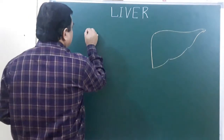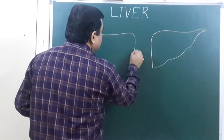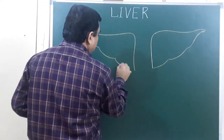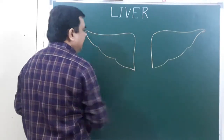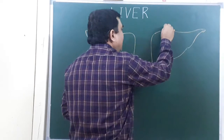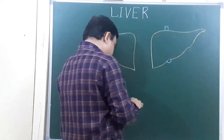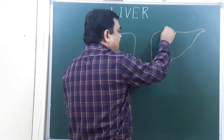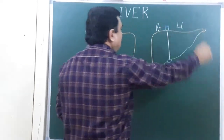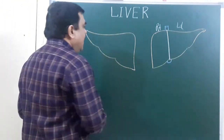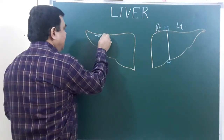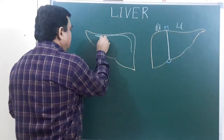This is the anterior surface of the liver and this is the posterior surface of the liver. Here is the fundus of the gallbladder, and here is the position of the inferior vena cava. A line from the fundus of the gallbladder to the inferior vena cava divides the liver into right and left halves. This is the physiological division line on the anterior side.